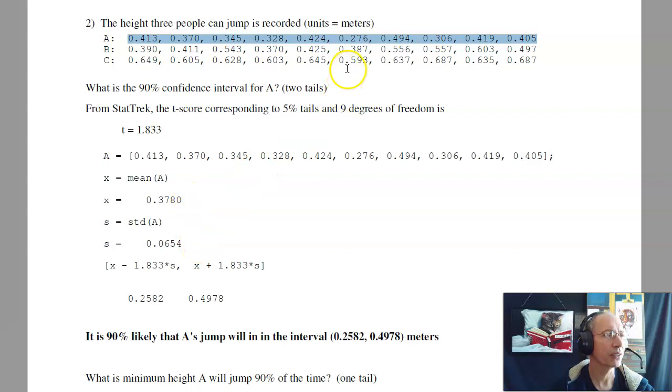From StatTrek, I've got 10 samples, meaning 9 degrees of freedom. 5% tails is 1.83 standard deviations, or t-score of 1.83. So I want to go left and right, 1.83 standard deviations from the mean. That means that when A jumps, 90% of the time the jump will be somewhere between 0.25 and 0.49 meters.